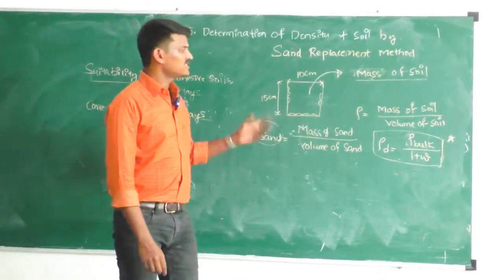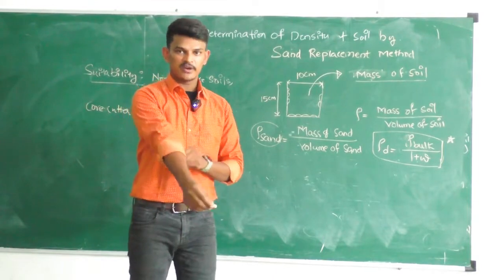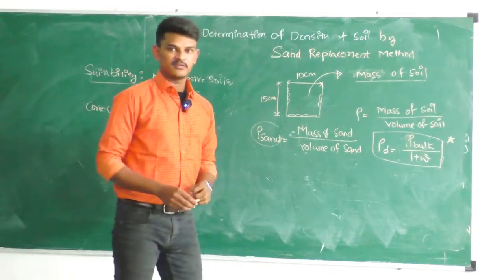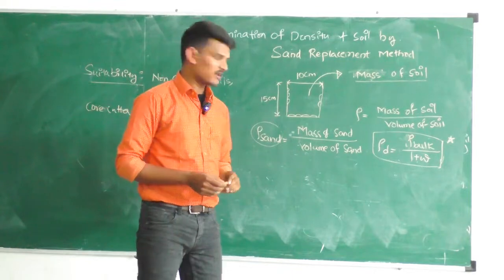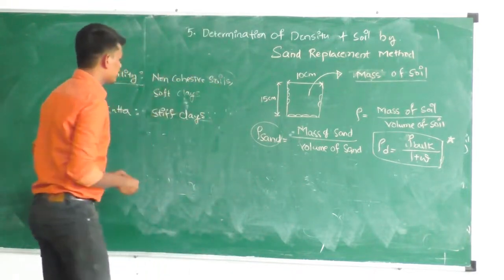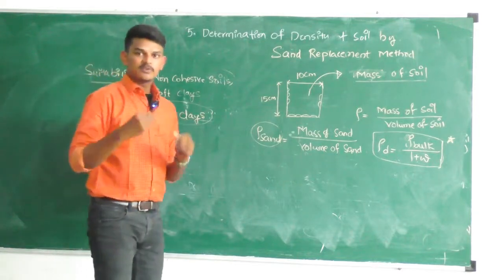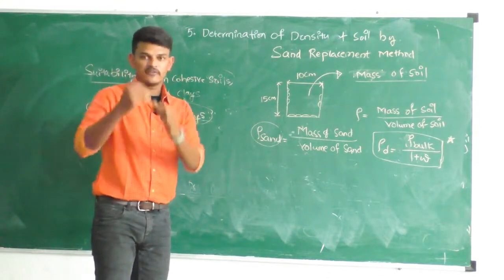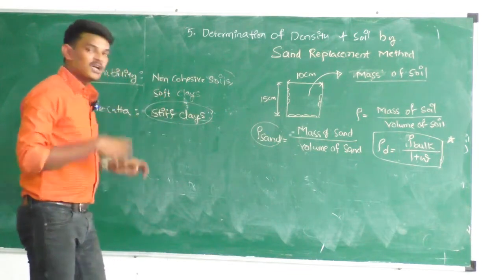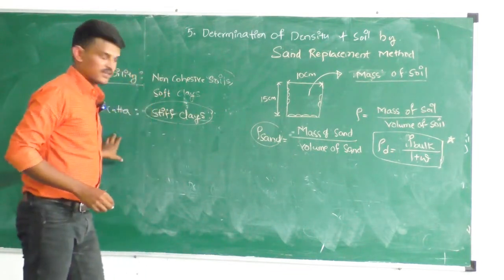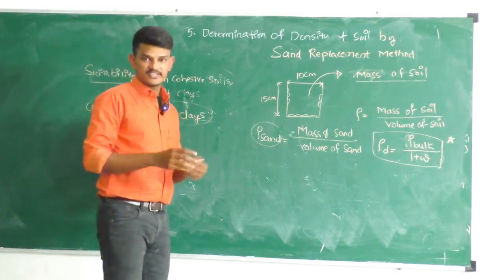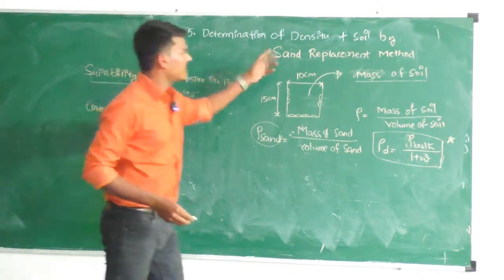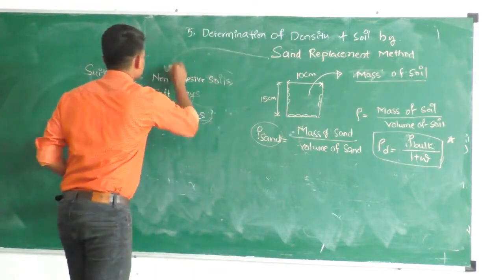Previously we covered the determination of density using the core cutter method. Today we are performing the determination of density by sand replacement method. The core cutter method is suitable for stiff clays because we are penetrating the soil, which must sustain the penetration without falling. For non-cohesive soil or soft soil, it is not possible to find density using the core cutter method, so we use the sand replacement method instead.